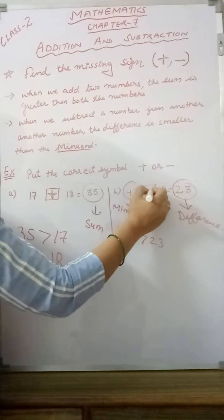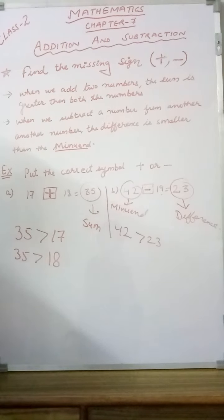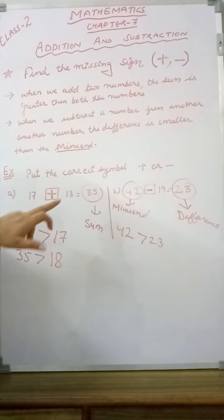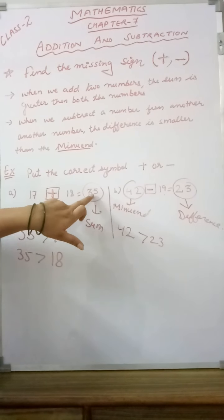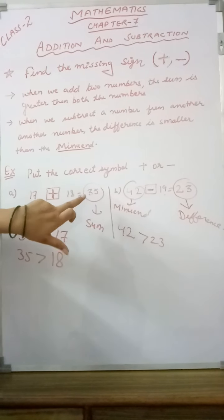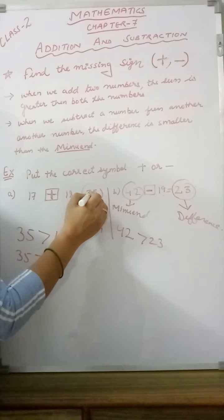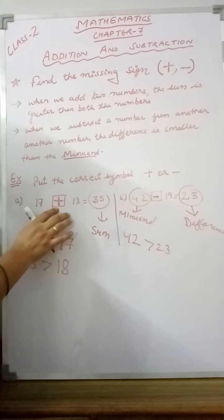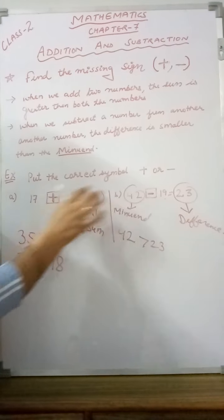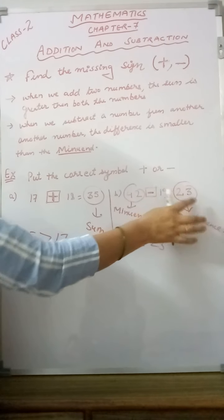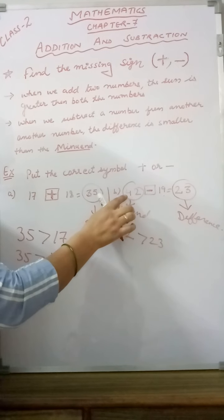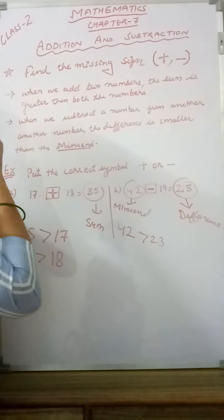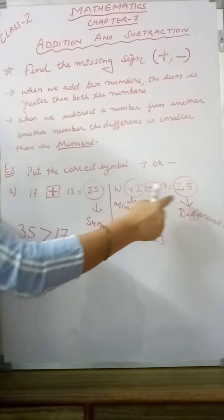Whenever a difference is less than the minuend, it means we are subtracting. So this is the way — you have to check the number statement. If the number written after the equals sign is bigger than both the numbers, it means that is a plus sign. If the answer is less than the minuend, there is another way also.